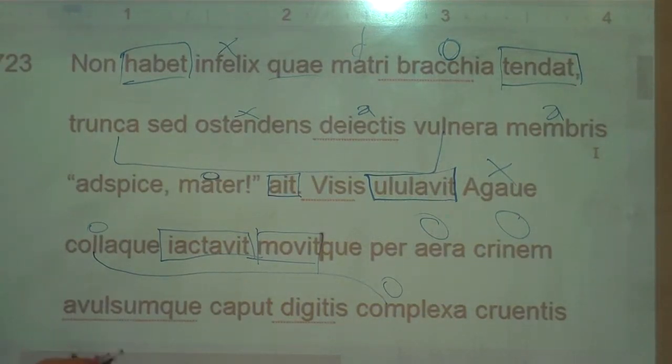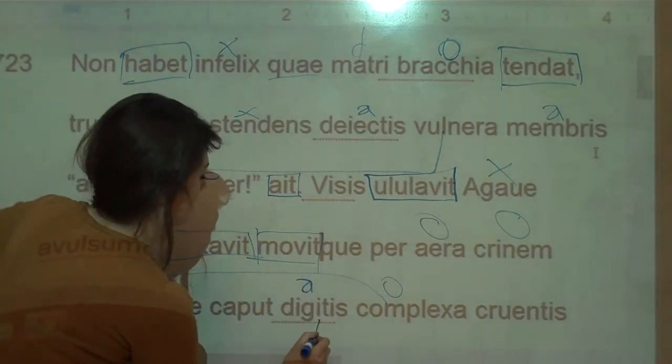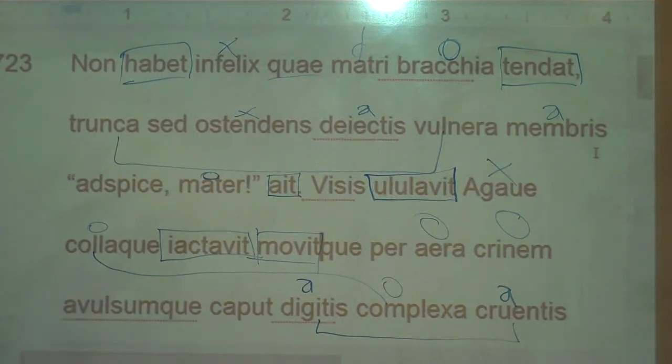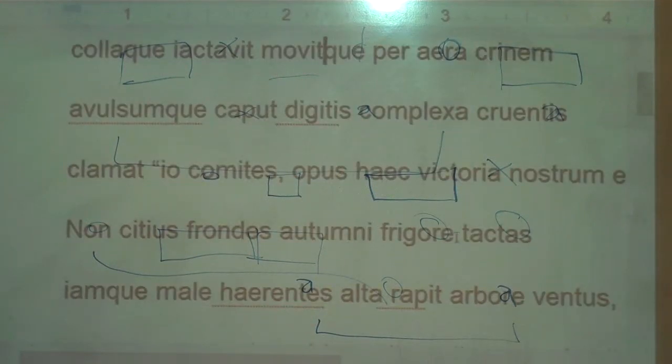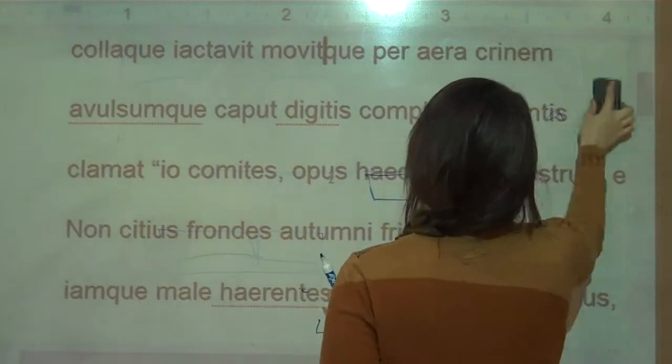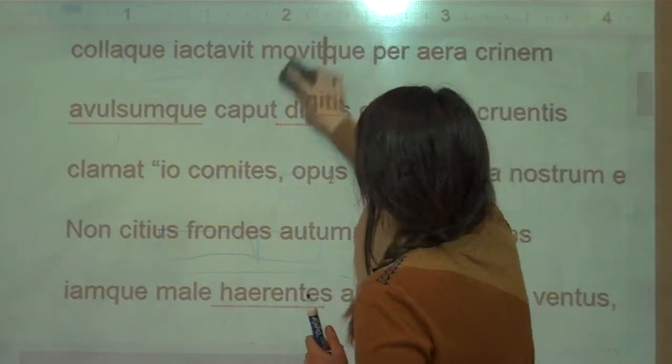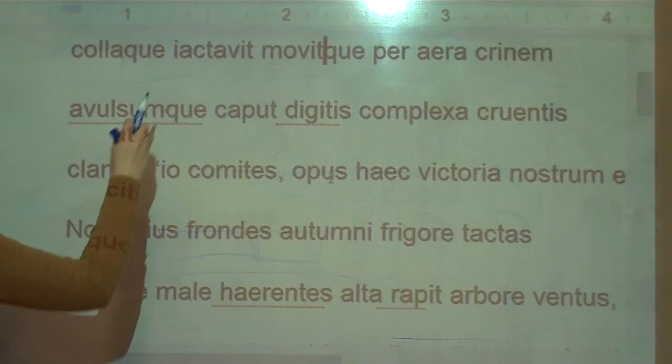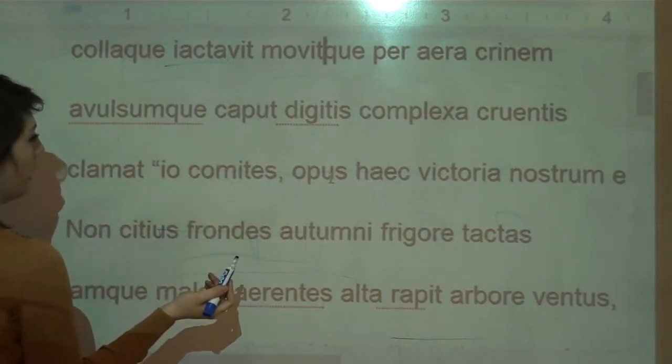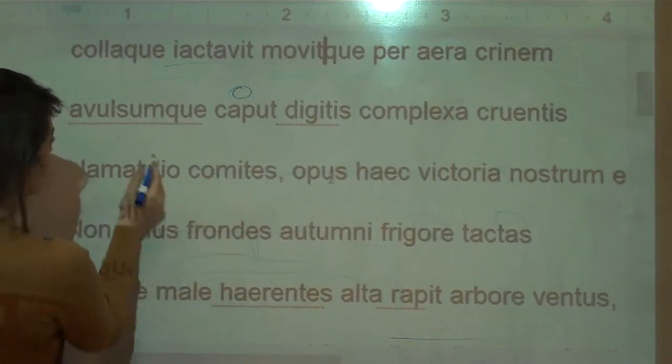And now she tears off Pentheus' head with cruel fingers or bloody or gory. With cruel fingers, where'd it go? Oh it's up there. With cruel fingers she - where's the thing? Oh I guess there's not really a verb but she is tearing off his head probably. That's what the ablative is, she tears off his head.